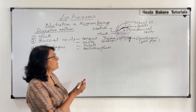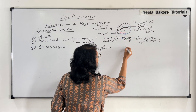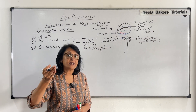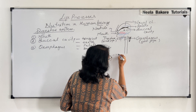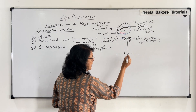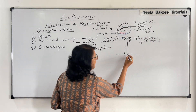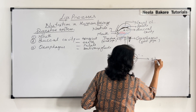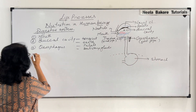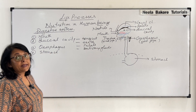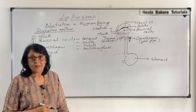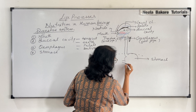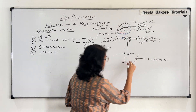The esophagus is a tube that goes through our neck, through our chest area, and then crosses the diaphragm — a membrane that separates the chest cavity and the abdominal cavity. This esophagus then enters the abdominal cavity and opens into a bag-like structure, which is our stomach. The next part of the digestive system is therefore the stomach.